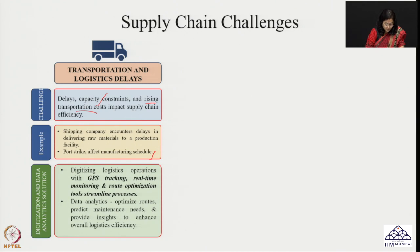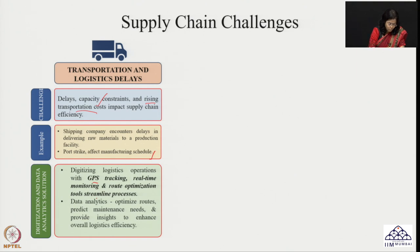What can be done here? Using digitalization and data analytics, transportation and logistics can be made more efficient. Digitizing logistics operations includes implementing systems like GPS tracking for real-time monitoring, ensuring large amounts of data are available. This data can be used for route planning and optimization, streamlining the whole process. Data analytics can optimize routes, predict maintenance needs for different vehicles, and provide insights to enhance overall logistics efficiency.